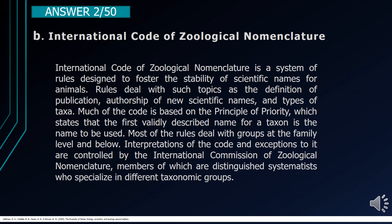Interpretations of the code and exceptions to it are controlled by the International Commission of Zoological Nomenclature, members of which are distinguished systematists who specialize in different taxonomic groups.